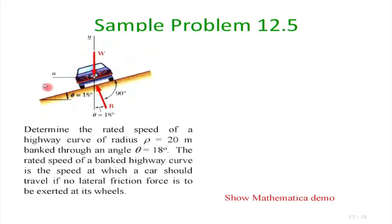One solution is banking the road — inclining it at a prescribed angle so that for a given radius of curvature ρ = 20 m and banking angle 18°, there is a rated speed at which no friction force is needed at the wheels. We are asked to find this rated speed.